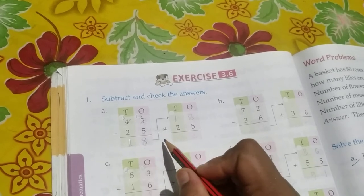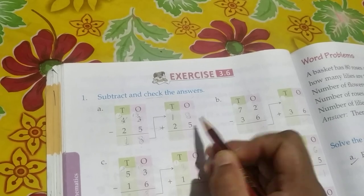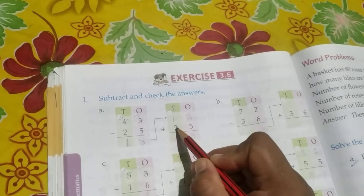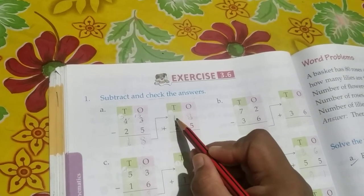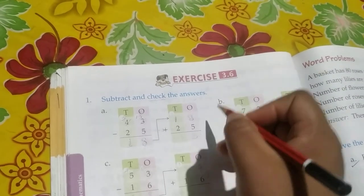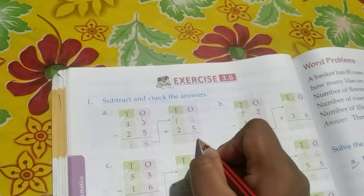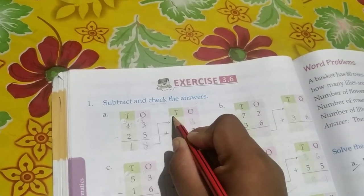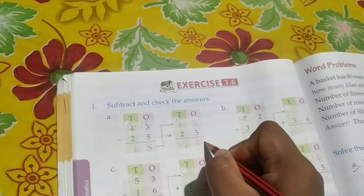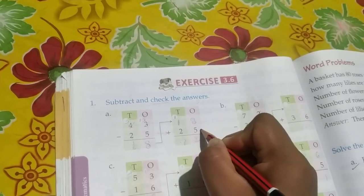So what is that? 8 plus 5 is going to be 13. This 3 comes here, and the 1 comes here. Now 1 plus 1 is 2, 2 plus 2 is 4. So we got the answer as 43. This 43, we got from 18 plus 25.